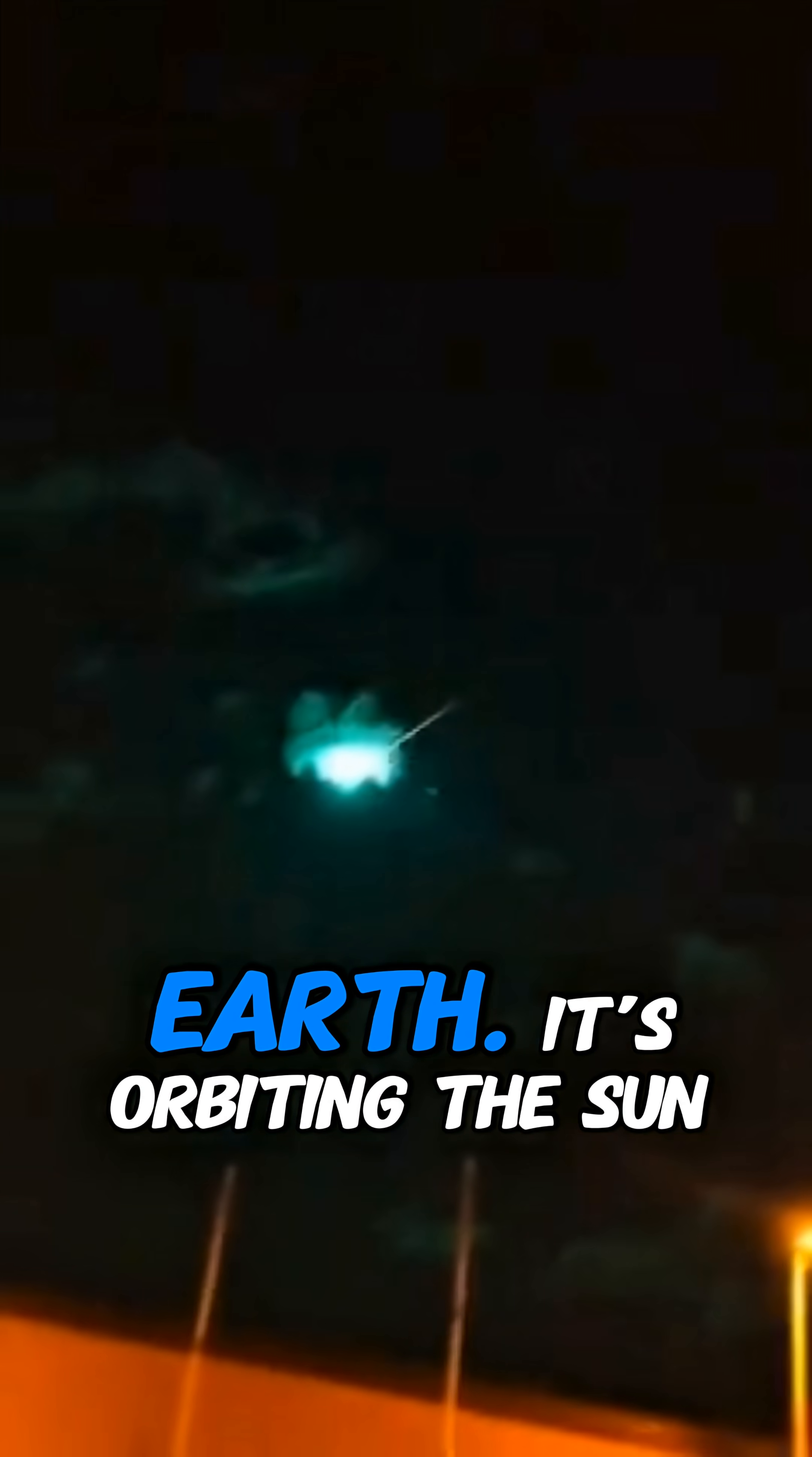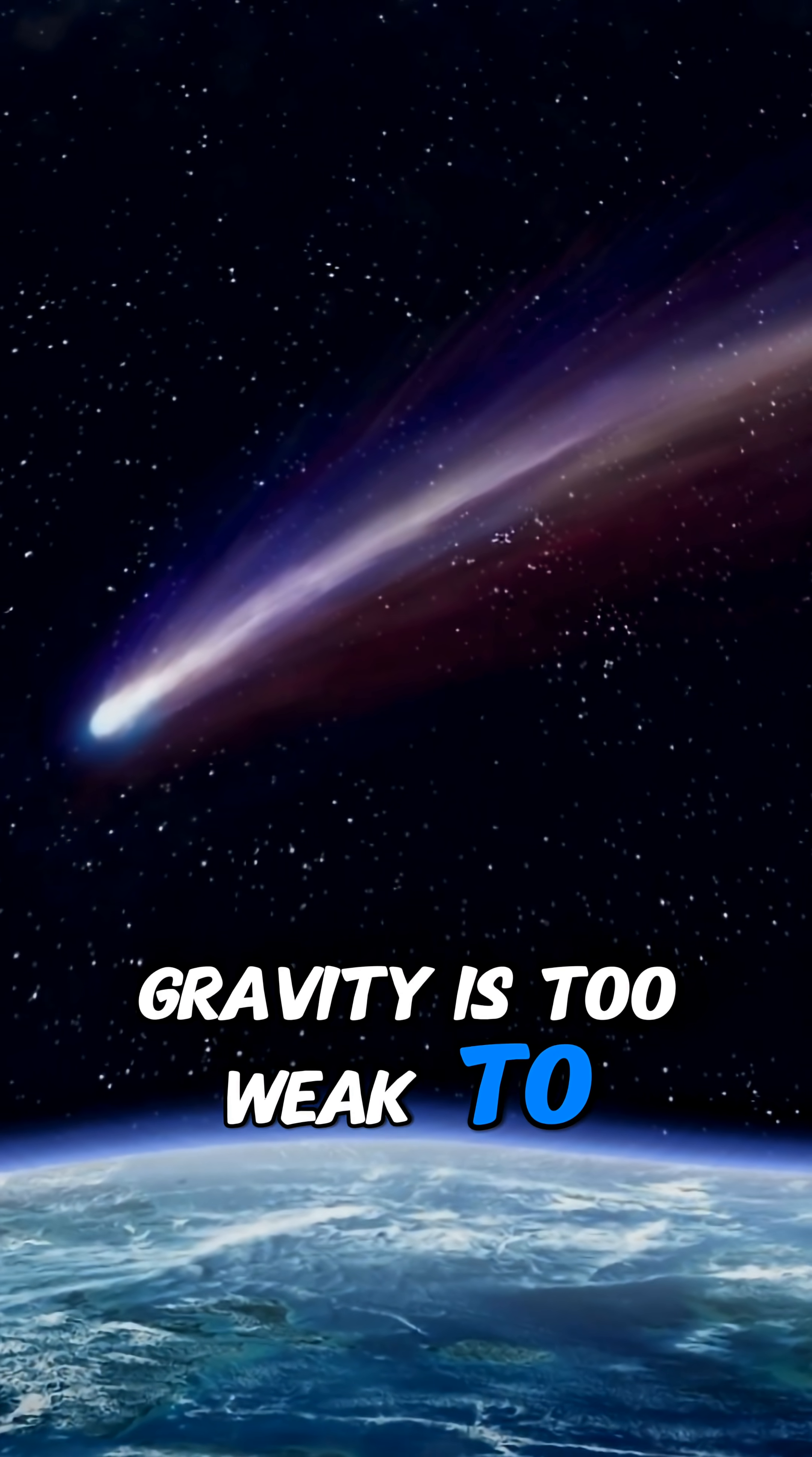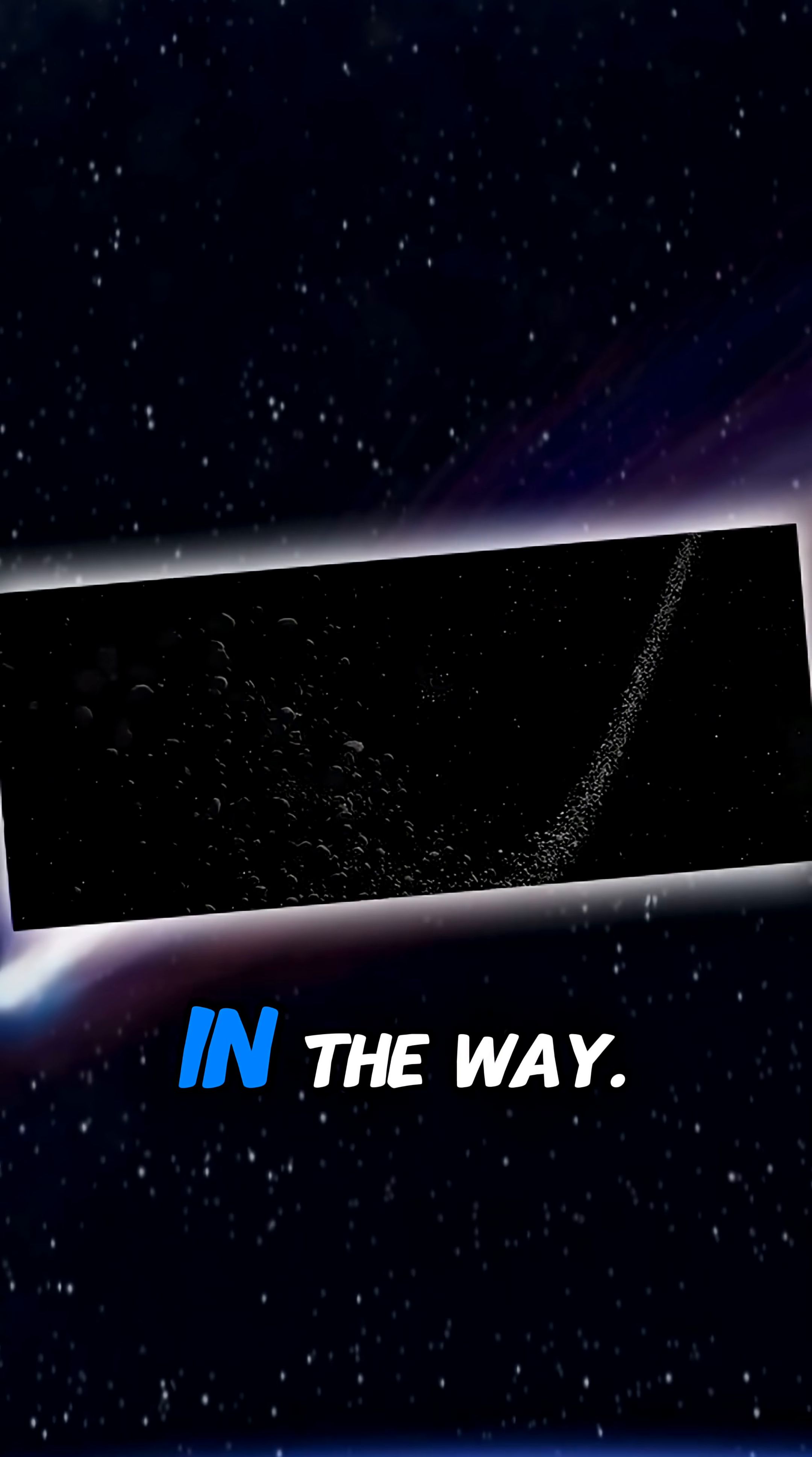The comet isn't aiming for Earth, it's orbiting the Sun, not us. When it passes Earth, our gravity is too weak to stop it. Earth is just in the way.